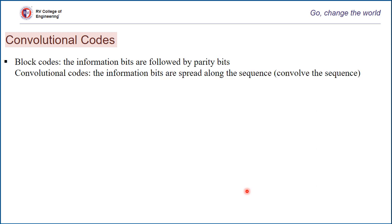The basic difference between block codes and convolution codes is about information bits transmission. In block codes, information bits are followed by parity bits. However, in convolution codes, information bits are spread over sequences of bits. This is obtained by convolving the information bits with the impulse responses of the memory. Hence, that mathematical convolution process has coined the term convolution codes.